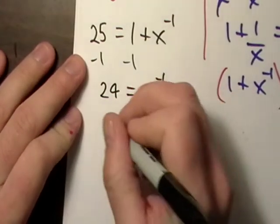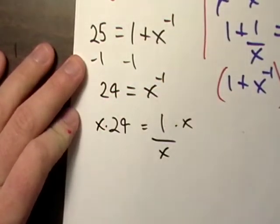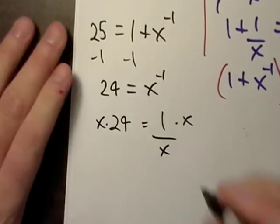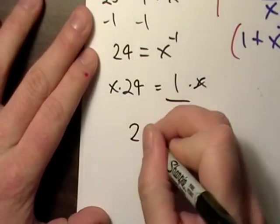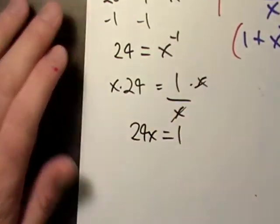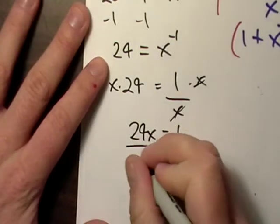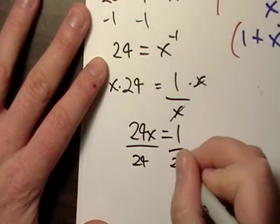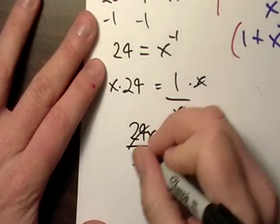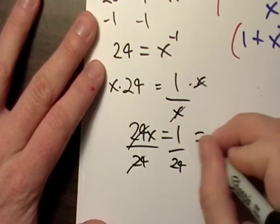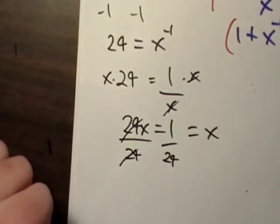Just so we don't confuse anyone, let's go ahead and multiply both sides by x. So 24x equals 1. Divide both sides now by 24, and we'll find out pretty quickly that 1/24 is equal to x.